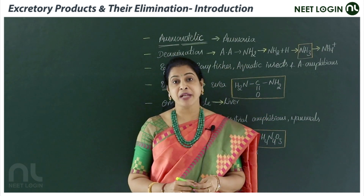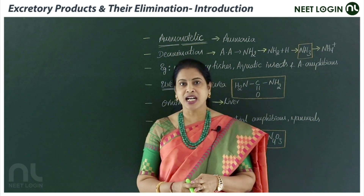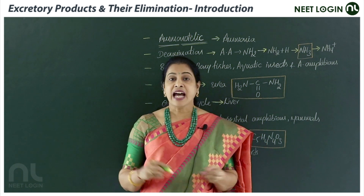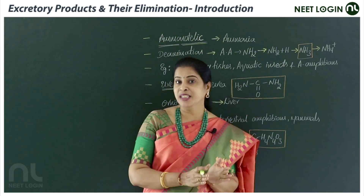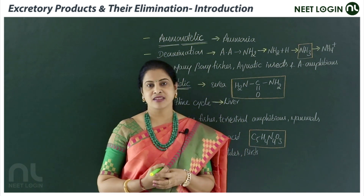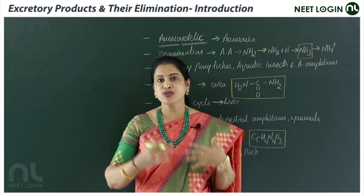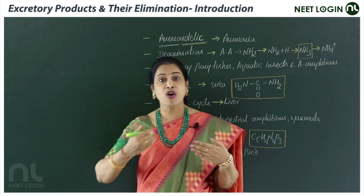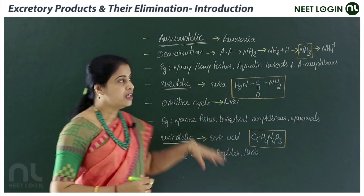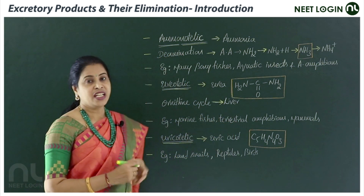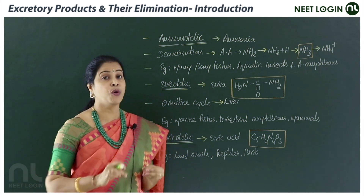Let's discuss some of the major nitrogenous wastes formed in animals: ammonia, urea, and uric acid. These are the result of metabolism. The type of nitrogenous waste formed in an animal suits its lifestyle — whether it forms ammonia, urea, or uric acid is based on physiological aspects; it is a physiological adaptation of the organism. In the case of ammonia, animals that excrete ammonia as their chief nitrogenous waste are called ammonotelic animals.